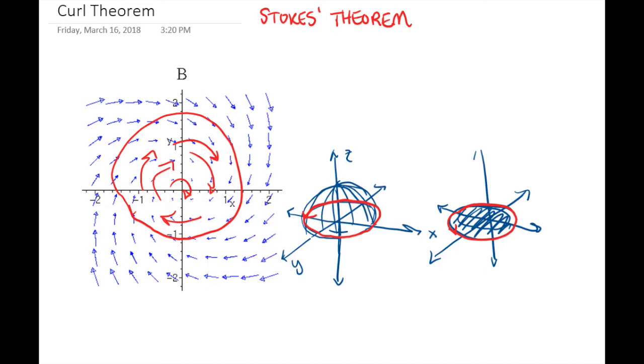So the mathematical expression for this is the integral over a surface of the curl of the vector dotted with the area vector of the surface is equal to the integral around a closed path of the vector dotted with an infinitesimal piece of length.